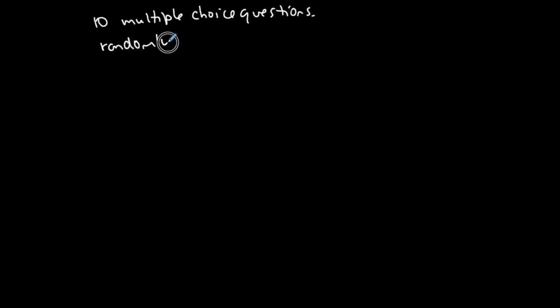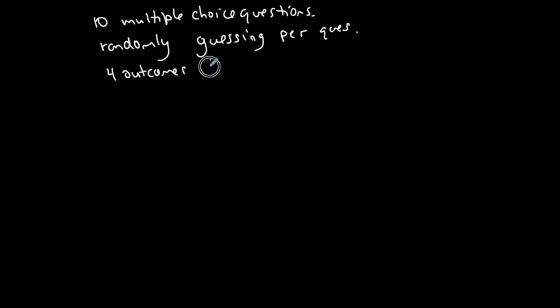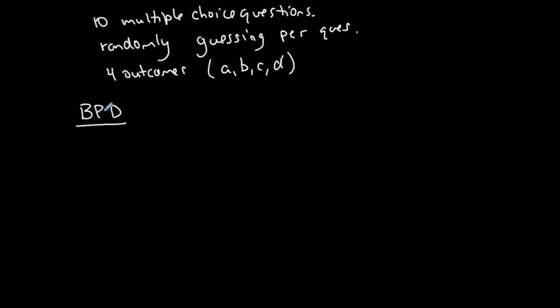Let's assume we have a 10-question multiple choice test and you don't know anything — you're randomly guessing on each question. Because it's multiple choice, you have four possible answers: A, B, C, or D. Let's verify whether this is a binomial probability distribution case.